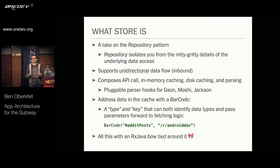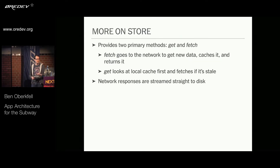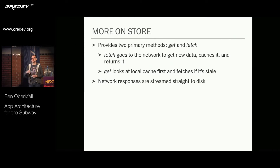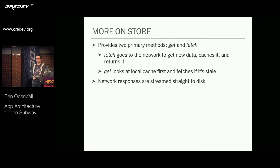All of this has a nice RxJava bow tied around it. The Store gives you two primary methods: get and fetch. A fetch goes to the network, gets data, caches it, and returns it. A get looks at your local cache and either fetches if it's stale or gives you back cached data. As the network response comes in, it streams straight to disk as well as being given back to you after it's been fed through your parser.